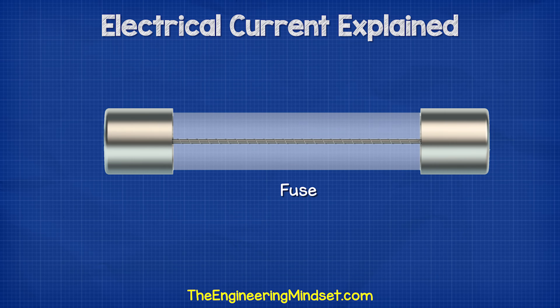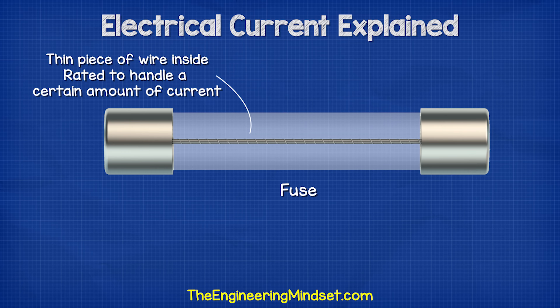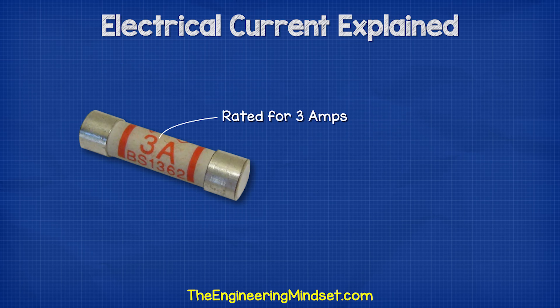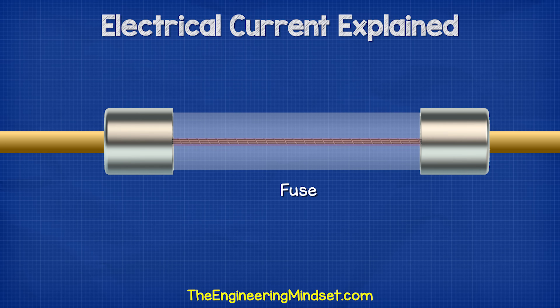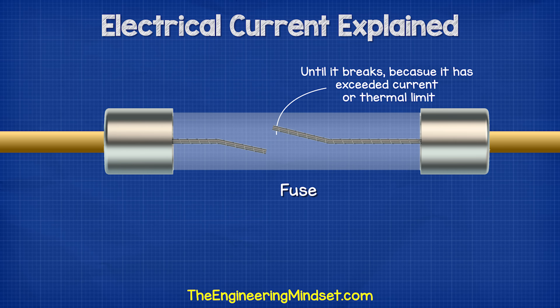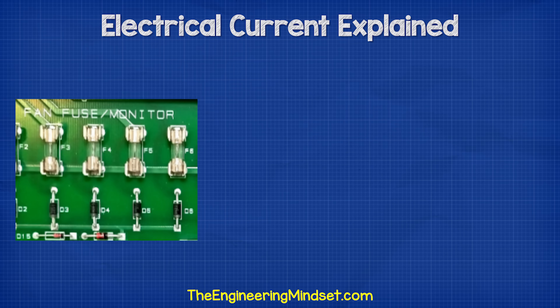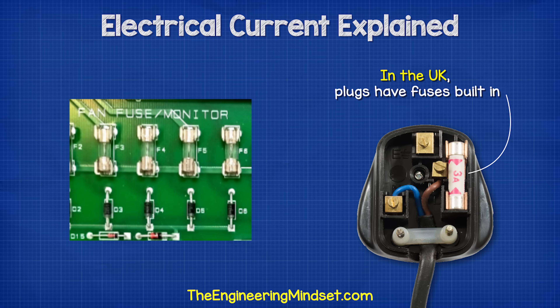Fuses, in a basic sense, have a thin piece of wire inside them which is rated to handle a certain amount of current flowing through them. In this case, this one is rated to handle 3 amps, or 19 quintillion 272 quadrillion electrons per second. If too much current flows in the circuit, then the fuse will burn out and this will open or break the circuit to protect the expensive electrical components. The fuse acts as a weak point and is very cheap to replace, so you can find these mounted on circuit boards, and in the UK, plugs will often have a fuse built in for added safety.